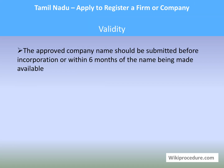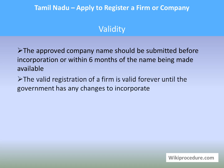Validity: The approved company name must be submitted for incorporation within six months of the name being made available. Once you choose or select the name, it is sealed for six months, so you must finish the procedure within that period. The valid registration of a firm is valid forever unless the government makes any changes.